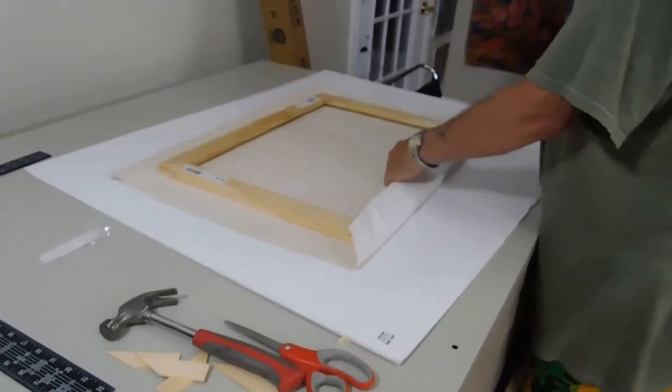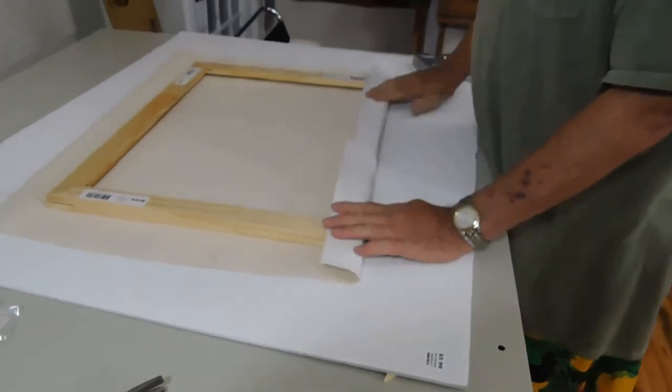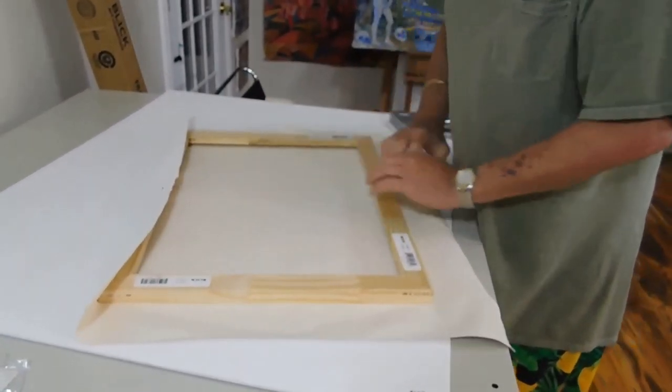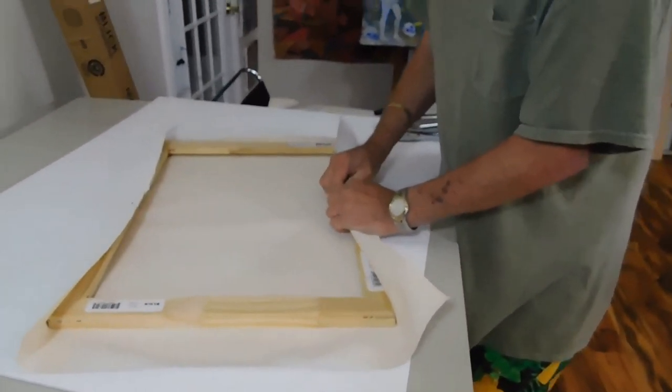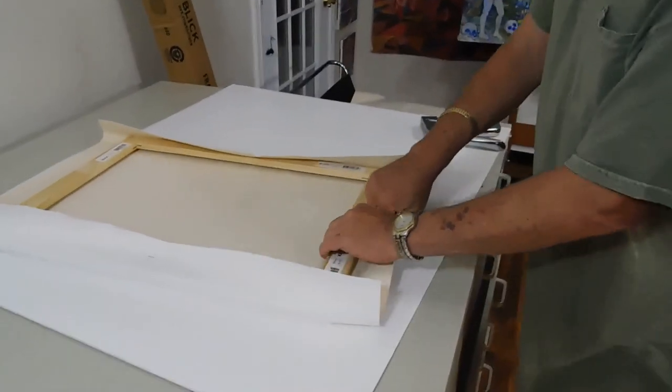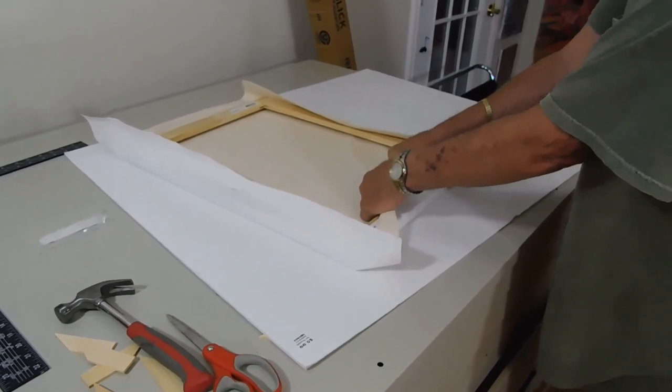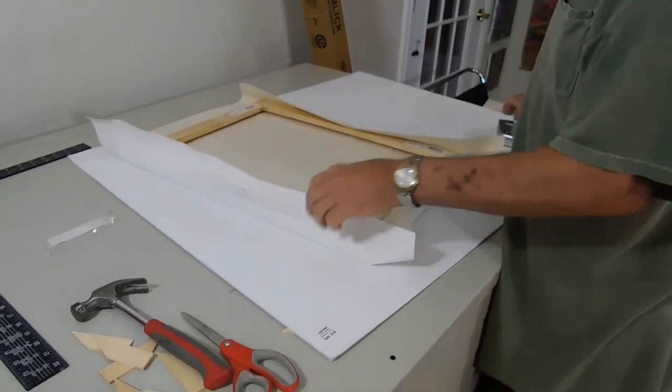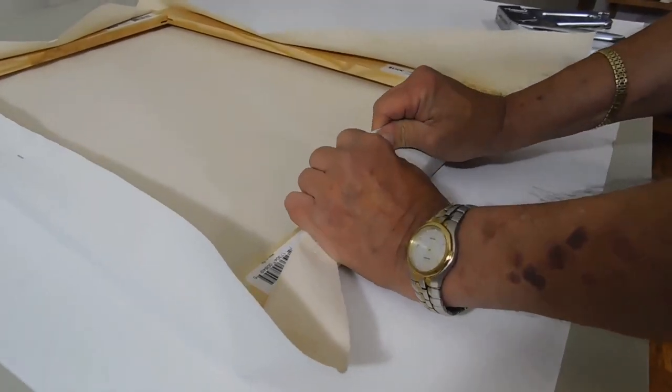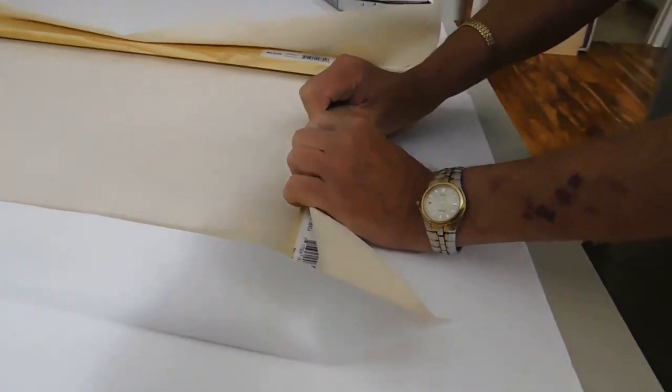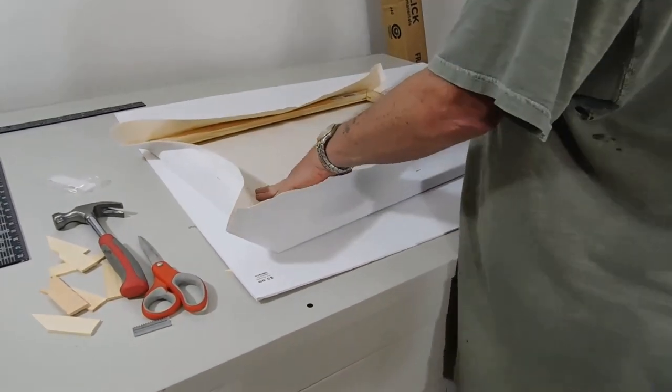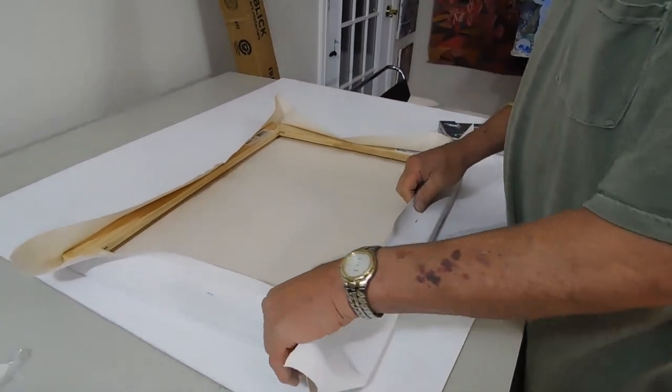So then we put a staple in on one side in the center. You turn it around. Move out the canvas directly across from the staple. We pull it. You see you get a little wrinkle in there, but you want to be right across. Put another staple in. And we do the same thing on the short side. So now it's a diamond shape or an X or a plus. There we go.